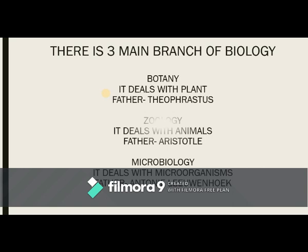The first main branch of biology is botany, which deals with plant science. The Father of Botany is Theophrastus, who was a student of Aristotle and also a Greek philosopher. The second branch is zoology, which deals with animals; the Father of Zoology is Aristotle, who is also known as the Father of Biology. The third branch is microbiology, which deals with microorganisms. The Father of Microbiology is Antonie van Leeuwenhoek, a Dutch scientist and businessman, also known as the first microscopist and first microbiologist.